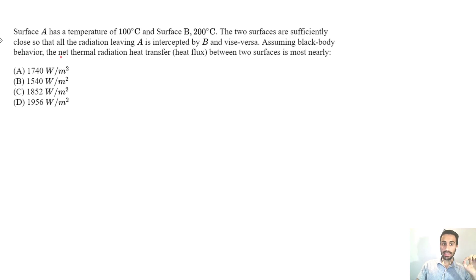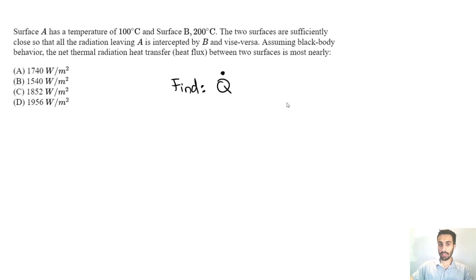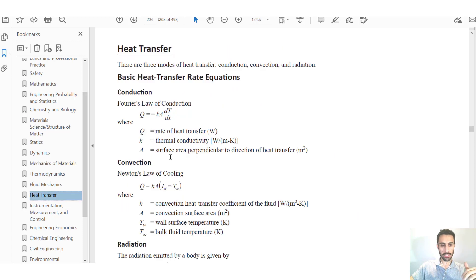We want to find the net thermal radiation heat transfer, which is our heat flux Q̇. We're assuming black body behavior, and I'm going to refer to the FE Handbook — specifically the heat transfer section.